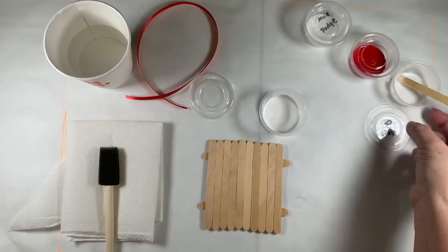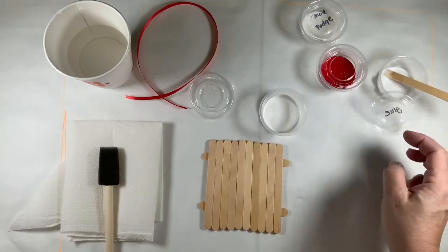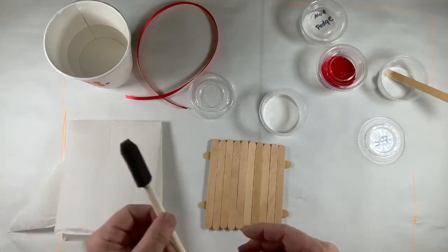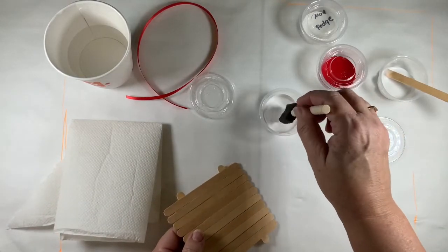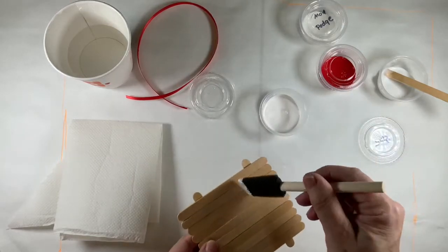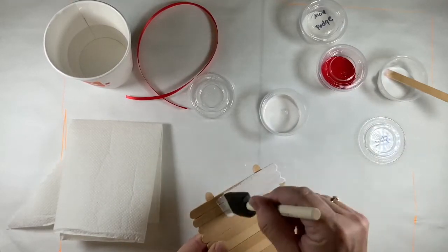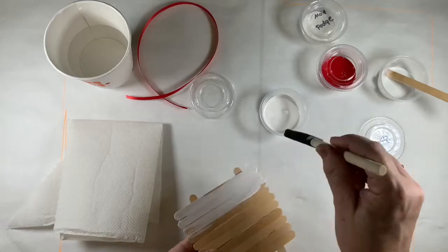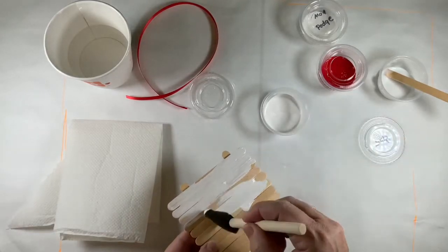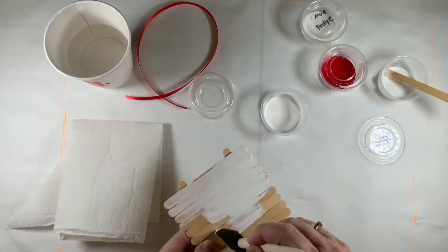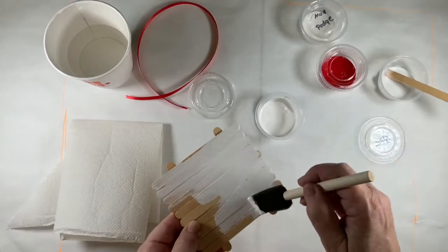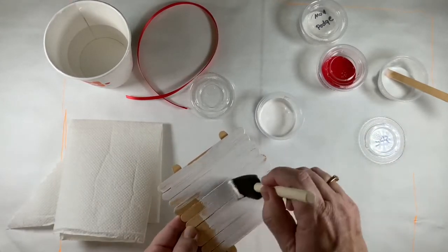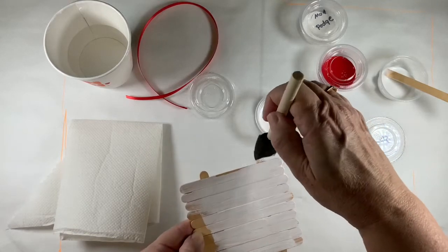So I'm going to open up the white paint, put away the glue a little bit so we have lots of room here for our stuff. And then we have a brush, so I'm just going to do back and forth strokes so we get everything covered with white paint.